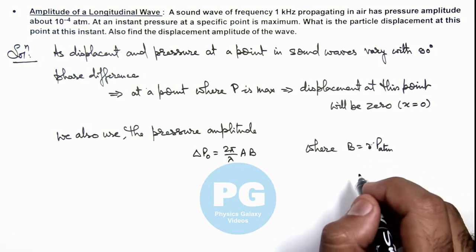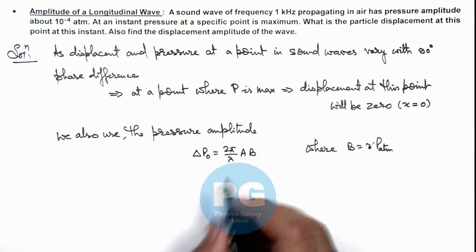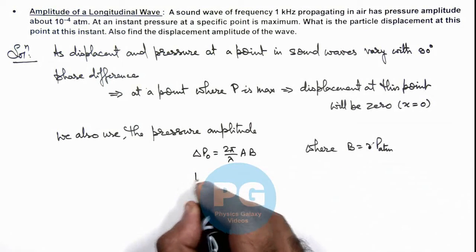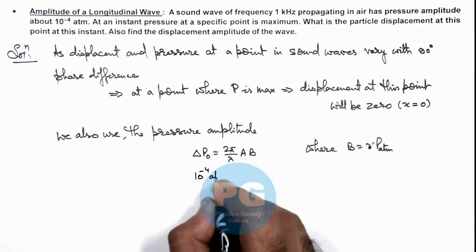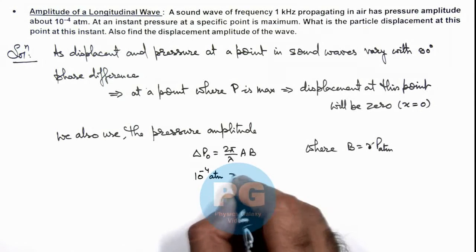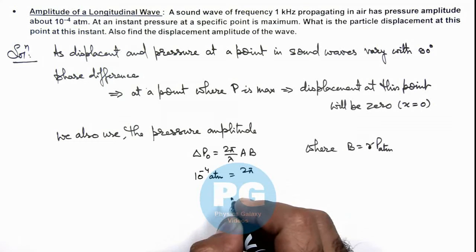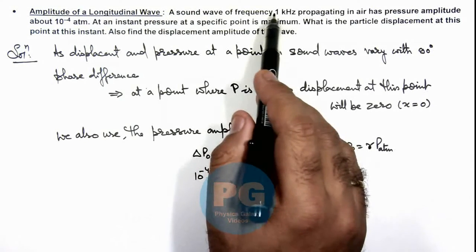So in this situation, we can analyze the value of Δp₀ is 10 to the power minus 4 atmosphere, and this equals 2π/λ. And the value of λ we can calculate as we know the frequency is 1 kilohertz.